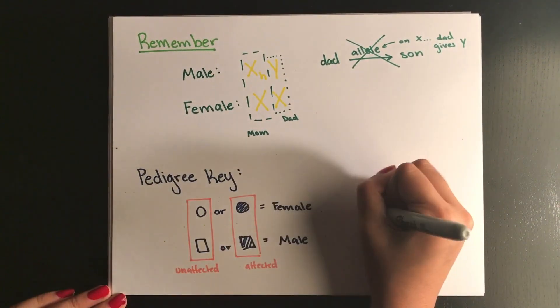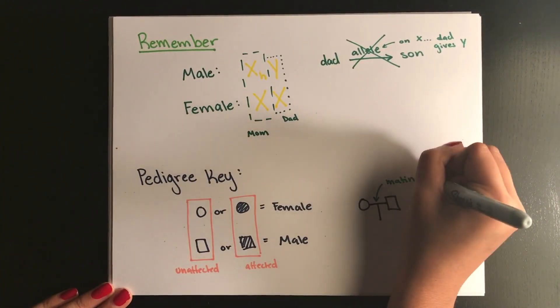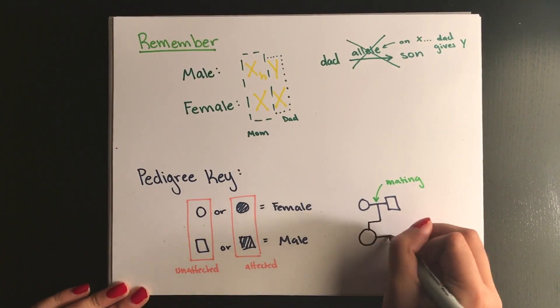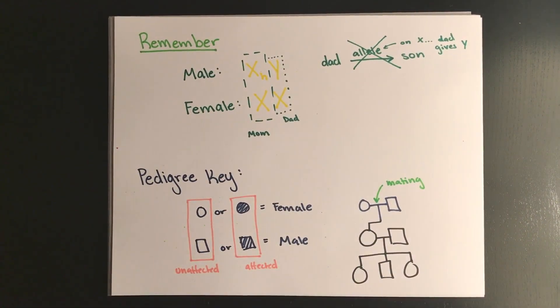As you go down the pedigree you go towards deeper generations, and when two shapes are connected by a horizontal line that means that they have mated.